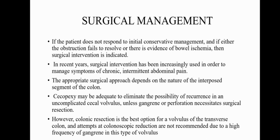If the patient does not respond to initial conservative management, and if either the obstruction fails to resolve or there is evidence of bowel ischemia, then surgical intervention is indicated. In recent years, surgical intervention has been increasingly used to manage symptoms of chronic intermittent abdominal pain. The appropriate surgical approach depends on the nature of the interposed segment of the colon. Cecopexy may be adequate to eliminate the possibility of recurrence in an uncomplicated cecal volvulus, unless gangrene or perforation necessitates surgical resection. Colonic resection is the best option for a volvulus of the transverse colon, and attempts at colonoscopic reduction are not recommended due to the high frequency of gangrene in this type of volvulus.